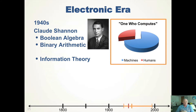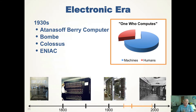In the forties, Claude Shannon worked on Boolean algebra, binary arithmetic — which is what computers of today actually use — and information theory about how much information can be stored or transmitted. They also started developing electronic computers designed to do several things. The Atanasoff-Berry computer did math. The Bombe was a decryptor used during World War II. Colossus was another decryptor. ENIAC was a large computer that you actually had to program by changing the wires and how they were connected.